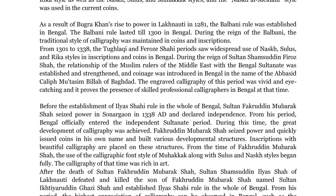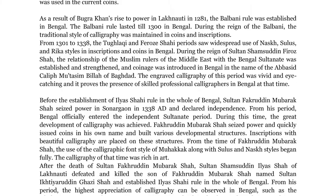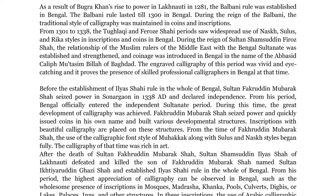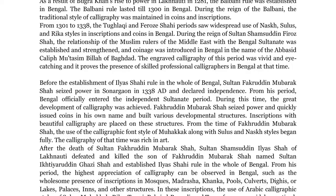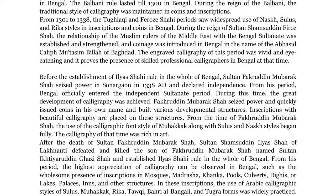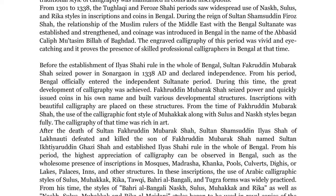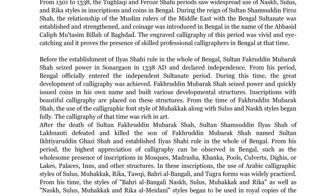Before the establishment of Ilyas Shahi rule in the whole of Bengal, Sultan Fakruddin Mubarak Shah seized power in Sunargaon in 1338 AD and declared independence. From his period, Bengal officially entered the independent Sultanate period. During this time, the great development of calligraphy was achieved. Fakruddin Mubarak Shah quickly issued coins in his own name and built various developmental structures, with inscriptions of beautiful calligraphy placed on these structures. From his time, the use of the calligraphic font style of Mahakik along with Sulus and Naskh styles began fully.